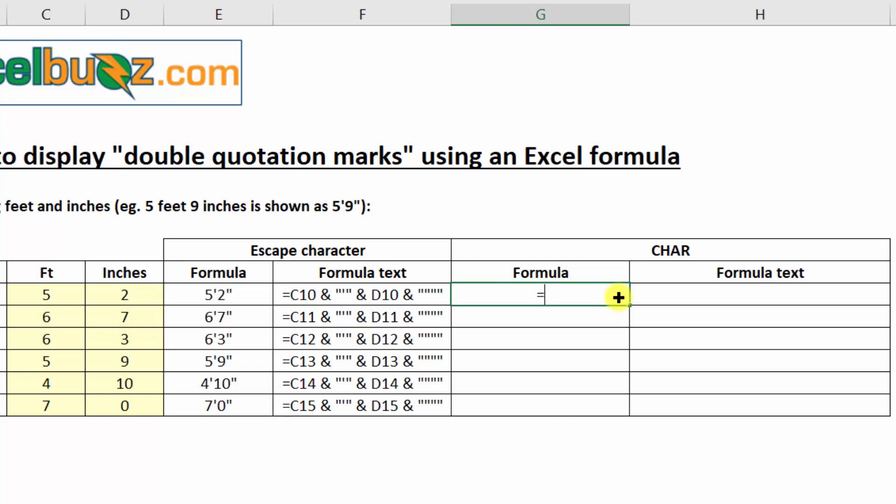So I'll go equals C10 again. And instead of typing the apostrophe or showing it as a string of text, I will use the character function there. It's character 39. Let's see what happens. Five feet.